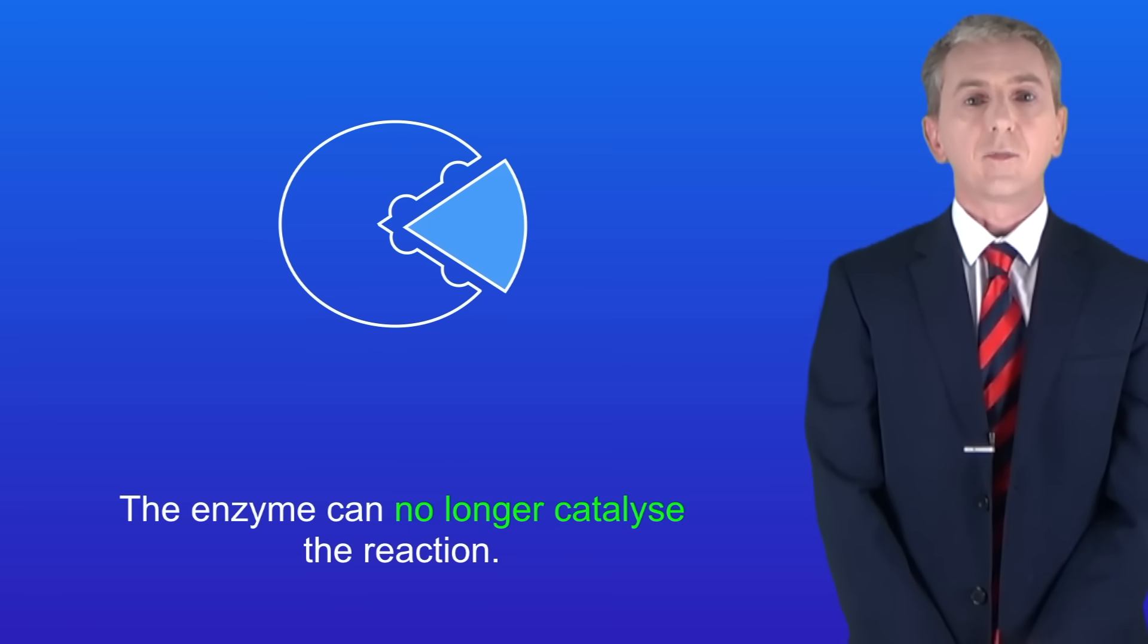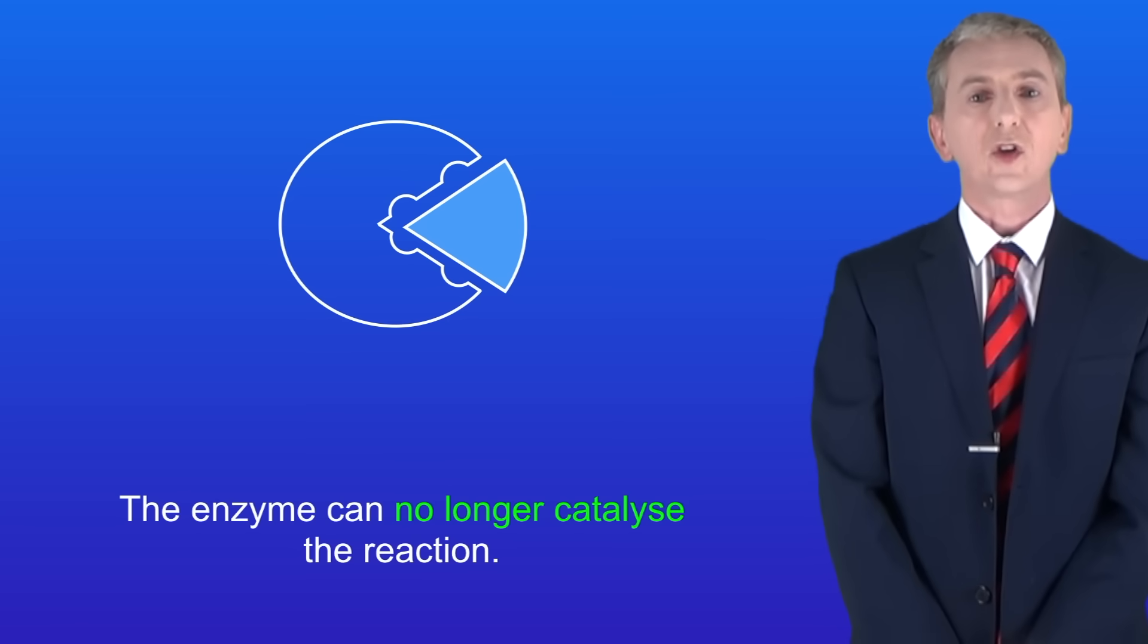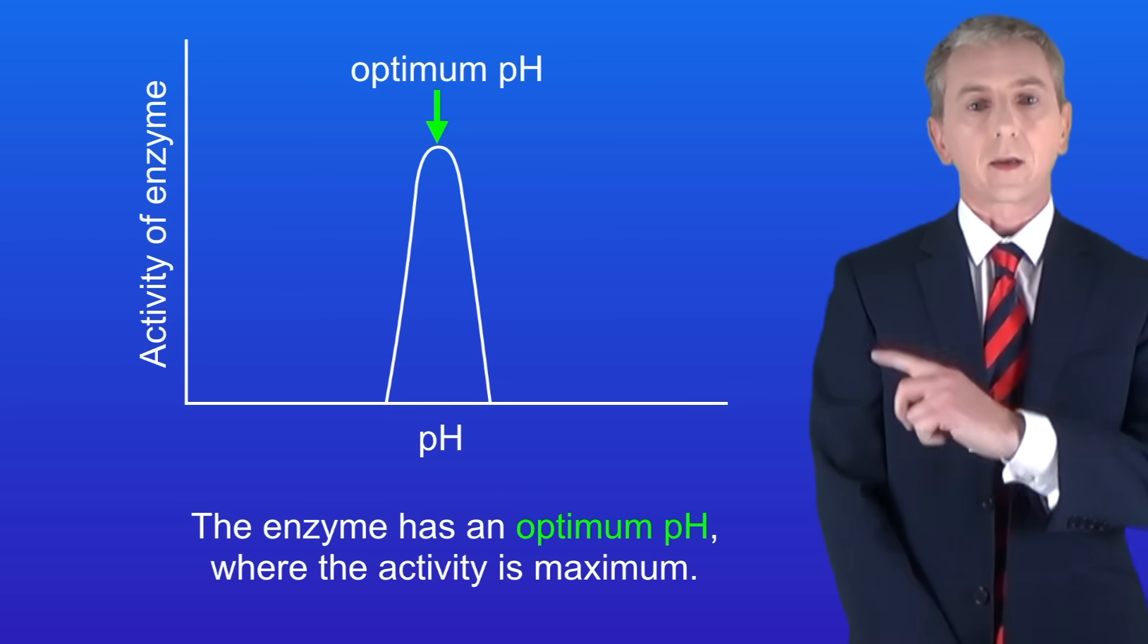Okay let's take a look now at the effect of pH on enzyme activity. In this case we're taking an enzyme catalyzed reaction and we're altering the pH. We're then measuring the activity of the enzyme at each pH, in other words the rate of the reaction. We get a graph that looks like this.